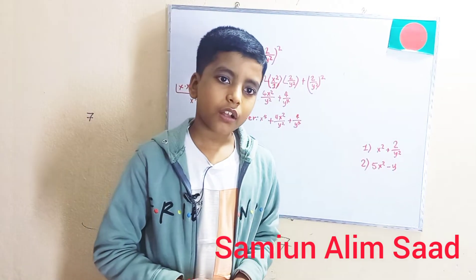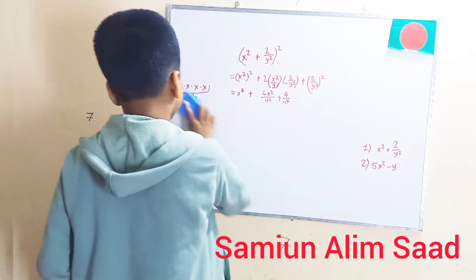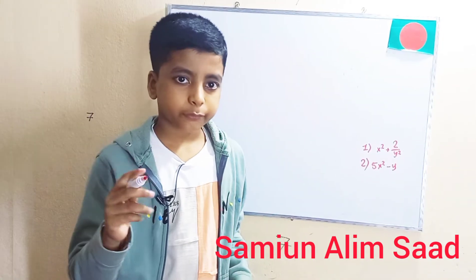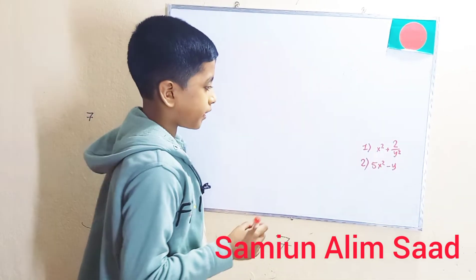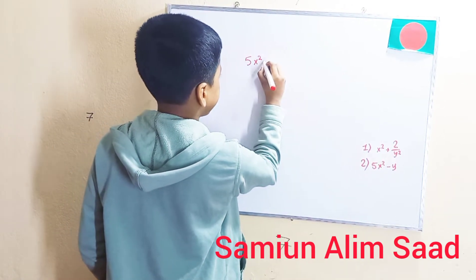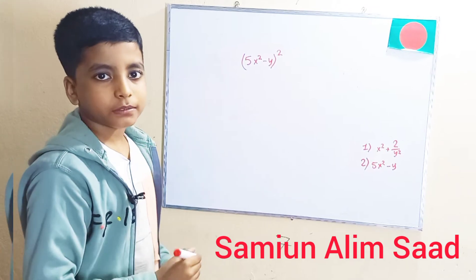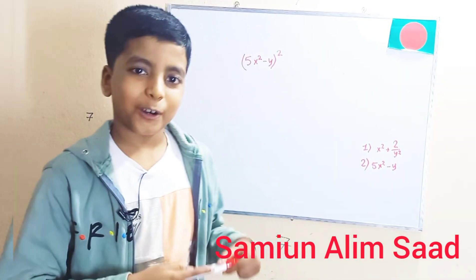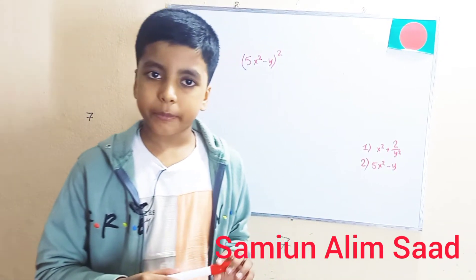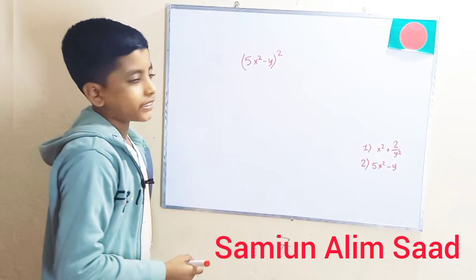So now let's continue. Let me just grab this duster and clean the board with it. So, 5x squared minus y. The equation is 5x squared minus y whole squared. Remember the a minus b whole squared formula — it is a squared minus 2ab plus b squared. So let's imagine that 5x squared is a, and y is b.